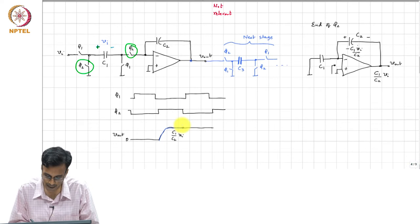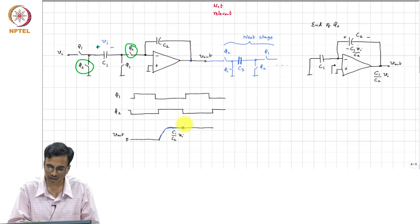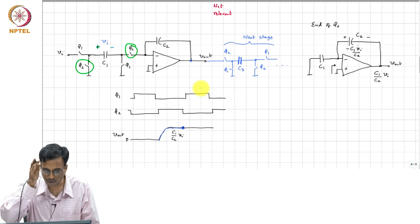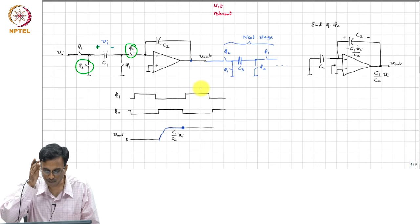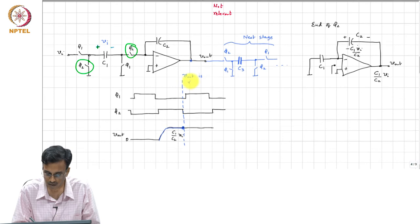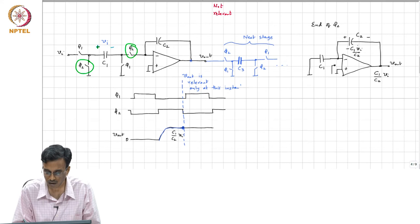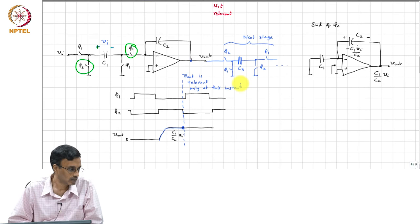So, the sampling, the time of interest or rather the waveform is not really interesting for us or for the next stage at any other time, it is only of interest just at the falling edge of phi_2. And the period with which phi_1 and phi_2 are changing...